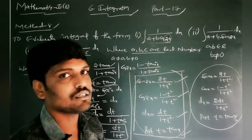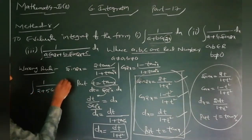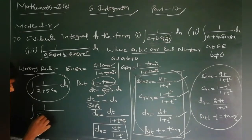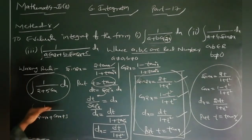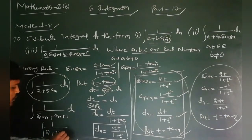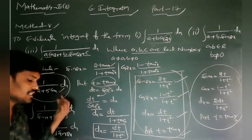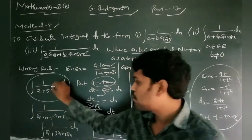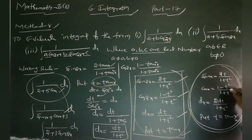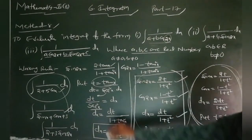Now some examples. Example: integral of 1/(2 + 5 cos x). This is in the form 1/(A + B cos x). Another example: integral of 1/(sin x + cos x + 3), which is in the form 1/(A sin x + B cos x + C). Another: integral of 1/(2 + 3 sin x). The first two examples have angle in terms of x, so we use the working rule with t = tan(x/2).